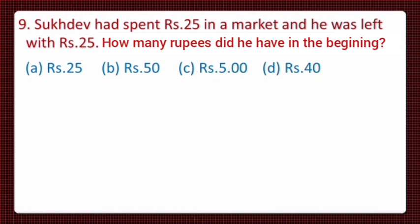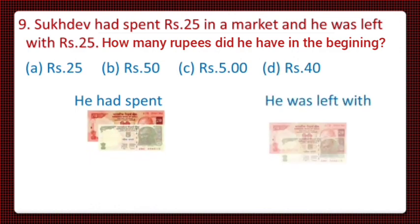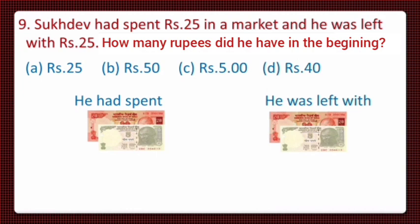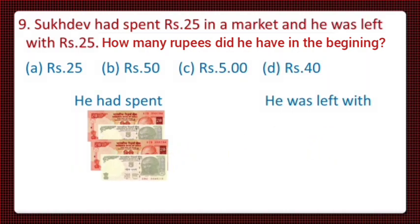So dear students, first of all let's see the spent rupees, that's rupees 25, and the left rupees, that's also rupees 25. We have to find the rupees he had in the beginning, and to find that we will add the money spent and the money left. So we add 25 plus 25 and we get rupees 50. Sukhdev had rupees 50 in the beginning, and that's given in option B. So let's take option B.